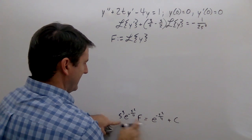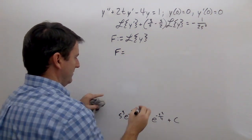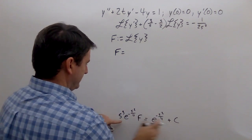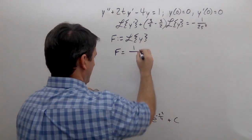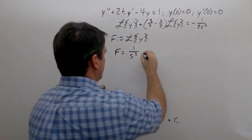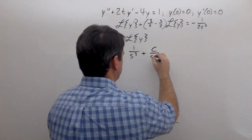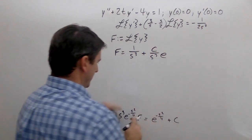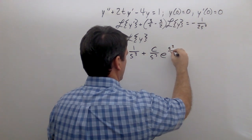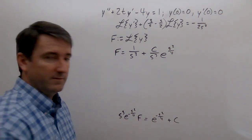Dividing both sides by s cubed e to the negative s²/4 to isolate F, we get F equals 1 over s cubed plus C over s cubed times e to the positive s²/4.